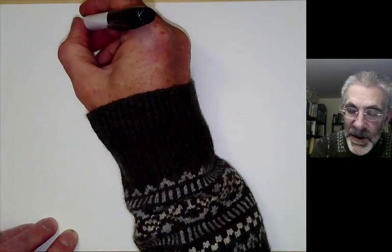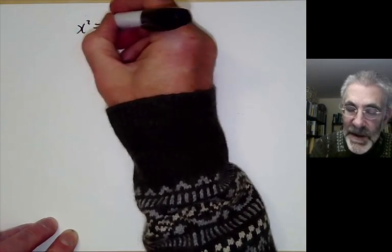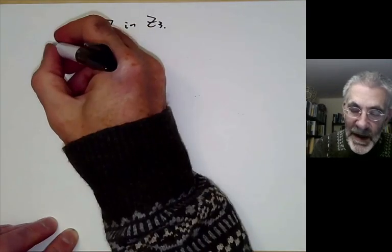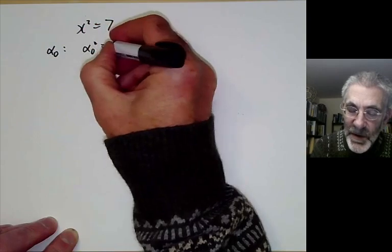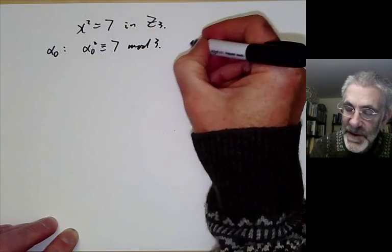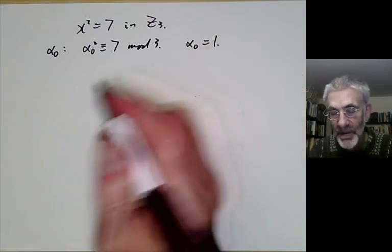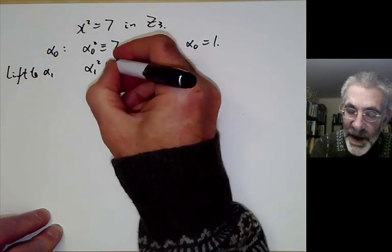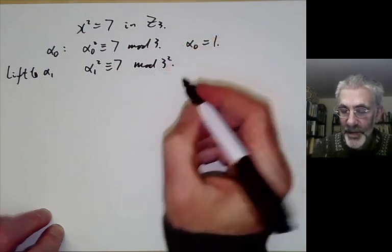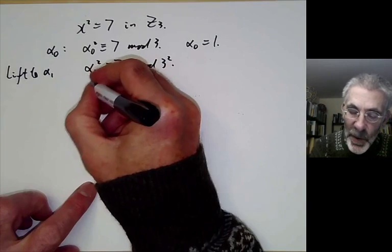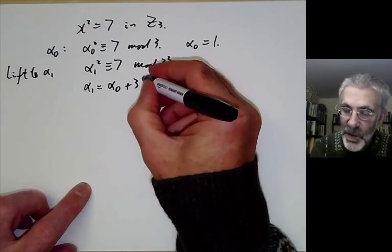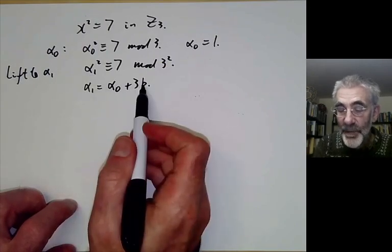To see why this is true, let's work out an example. Suppose we want to solve x² = 7 in the 3-adic integers. We find an approximate root alpha_0: we want alpha_0² ≡ 7 mod 3, and we can just take alpha_0 = 1. Now we lift to alpha_1: we want alpha_1² ≡ 7 mod 3². Alpha_1 is going to be alpha_0 + 3b for some number b, and we need to figure out what b has to be.